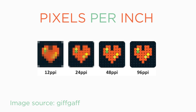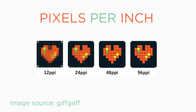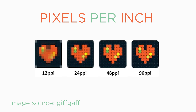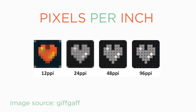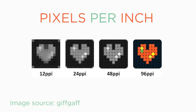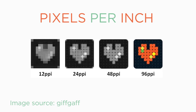For images, resolution is expressed by pixels per inch. A pixel is a unit of visual digital information. So when you have fewer pixels stored in an inch, you have less detail, or less information. When you have more pixels stored in an inch, you have more detail, or more information.